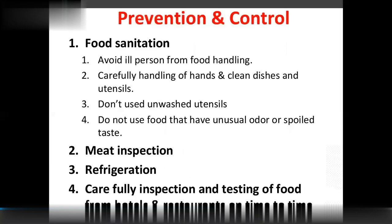Prevention and control of food poisoning: food sanitization, avoid ill persons from food handling, careful handwashing and use of clean dishes and utensils. Do not use food that has an unusual odor or spoiled taste. Meat inspection is important — non-veg food must be properly cooked. Refrigeration and careful inspection and testing of food from hotels and restaurants regularly.